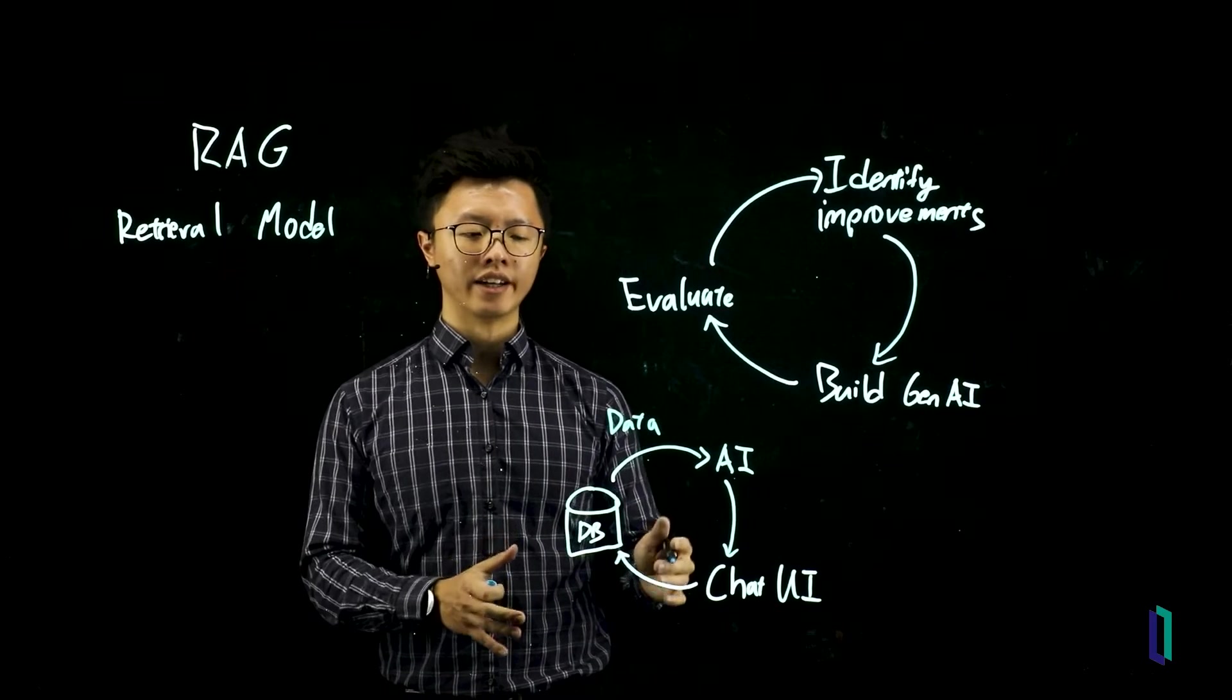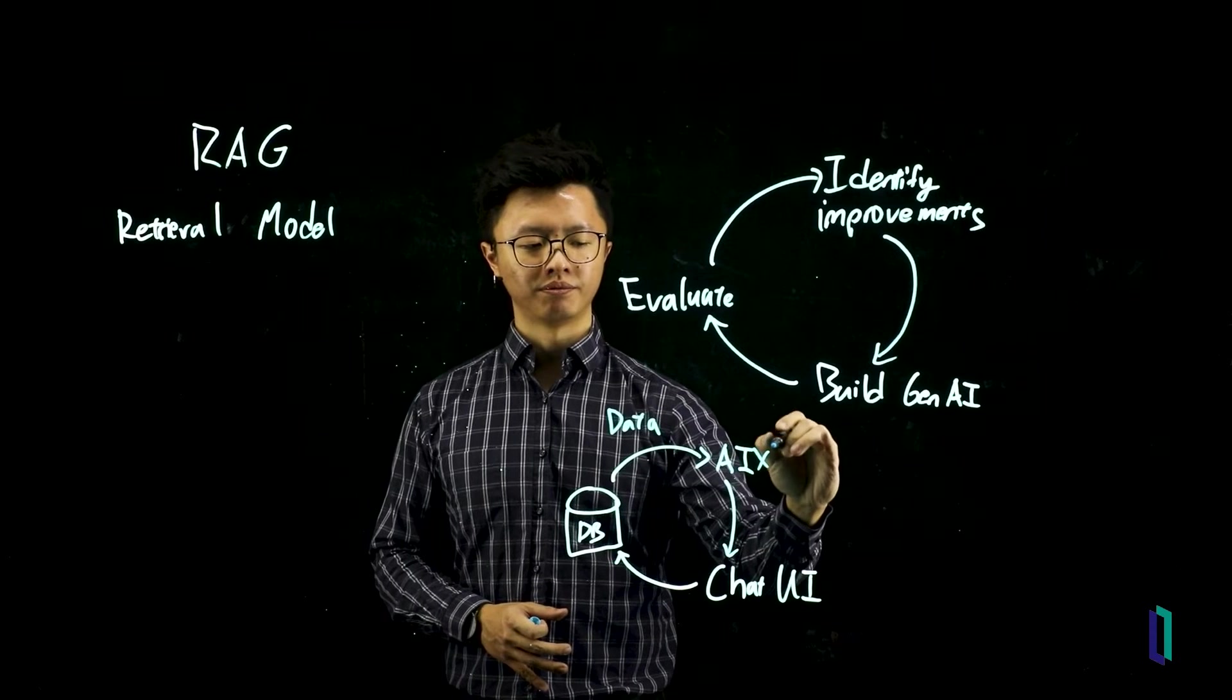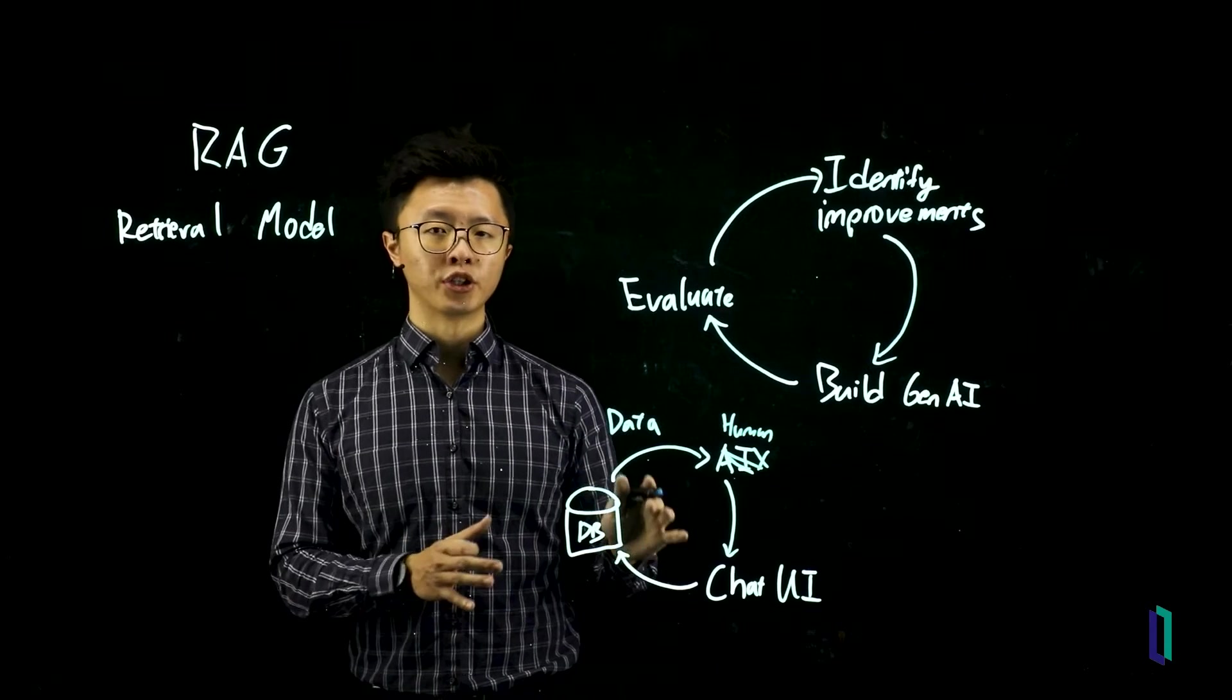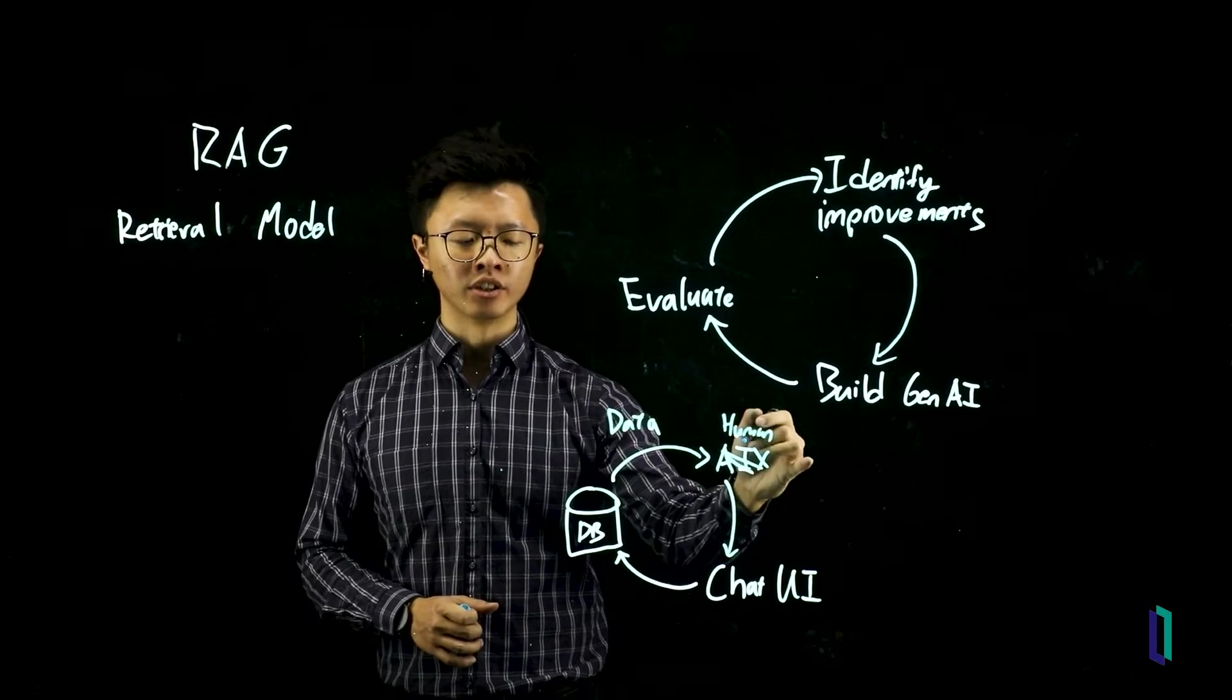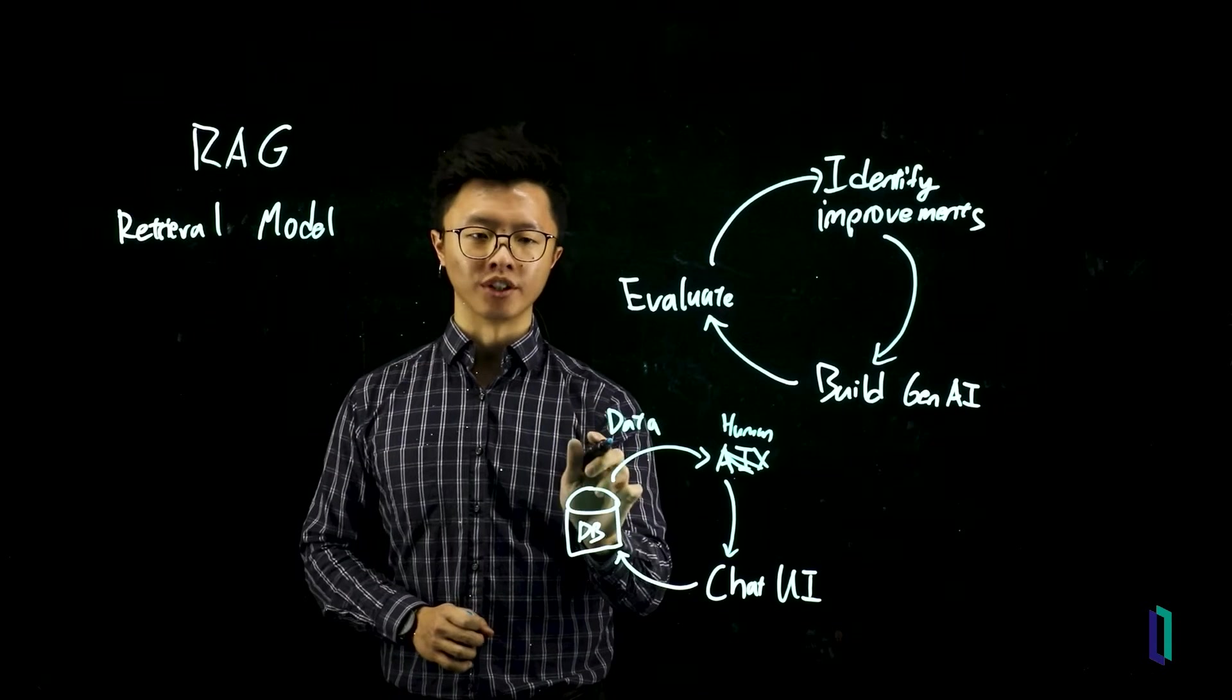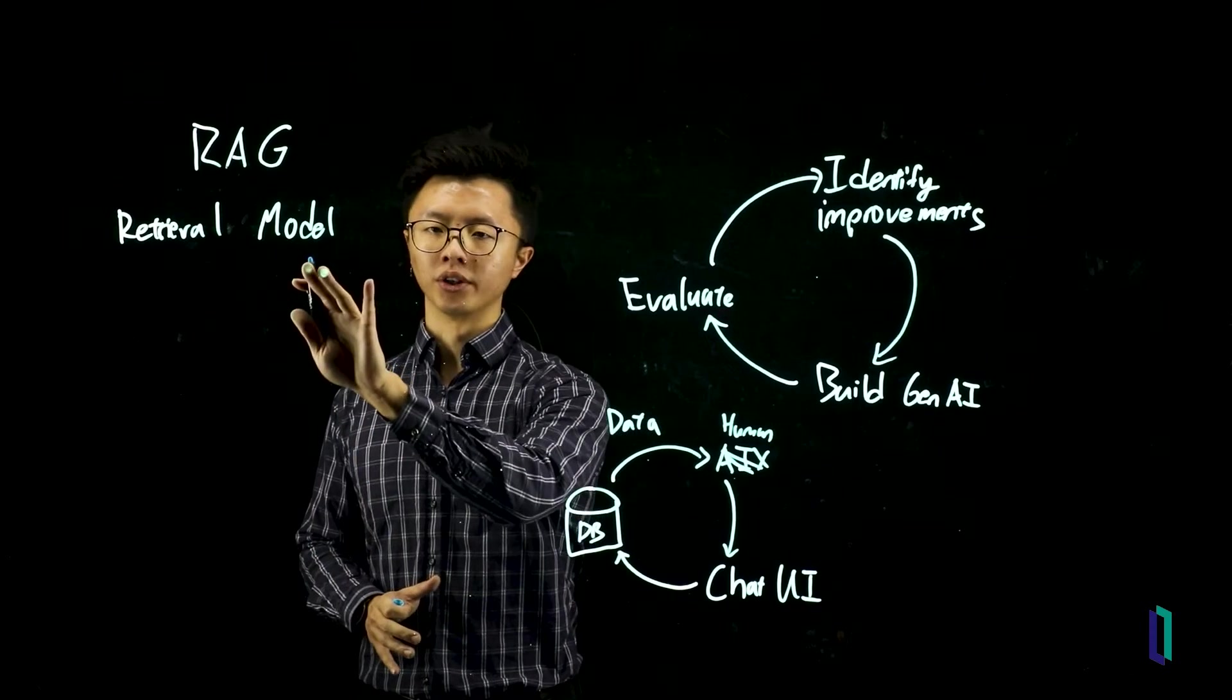I would look at this data and imagine that instead of an AI, I have just a human. If a human with this retrieved data can easily answer the user's question, that means the problem lies with the model. Because the data was sufficient, but the AI was the issue here. And so you would look at how to improve the model.